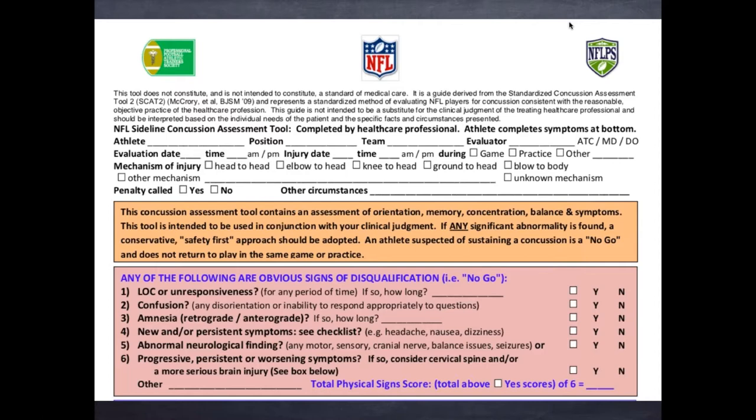The NFL assessment tool — the first part I like quite a bit. Did they have any loss of consciousness? Do they have any unresponsiveness? Do they have any confusion initially or now? Do they have any amnesia — can they recall the events before the hit, can they recall events after the hit? Do they have either new symptoms or persistent ones like headache, nausea, dizziness, any abnormal neurological findings? Along with questioning, you do a neuro assessment — hey, squeeze my fingers, good strength up and down on your wrist, can you feel me, what finger am I touching, is it sharp or dull? They look at the pupils. Do they have any progressive, persistent, or worsening injuries? You also have to consider cervical spine injury or a worsening brain injury — do they have deteriorating mental status, neck pain, cervical spine tenderness, decreased range of motion, how are their pupils, are their extra-ocular movements equal?